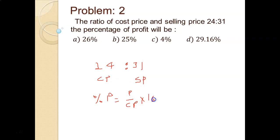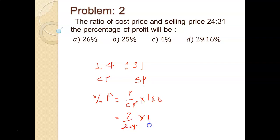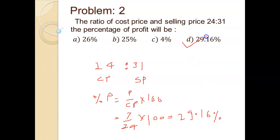What will be profit? Profit is nothing but selling price minus cost price: 31 minus 24, that is 7. So profit is 7. Percentage of profit is 7 upon 24 into 100. This calculation gives 29.16%, so that option is the right answer.